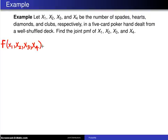How do we know this is a joint probability mass function and not a probability density function? The random variables here are the number of spades, hearts, diamonds, and clubs in the five-card poker hand, so naturally you would expect them to be discrete.